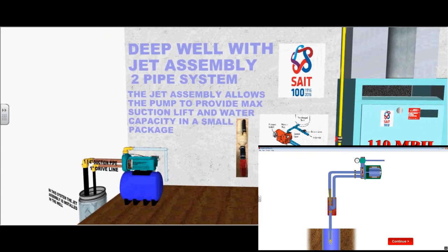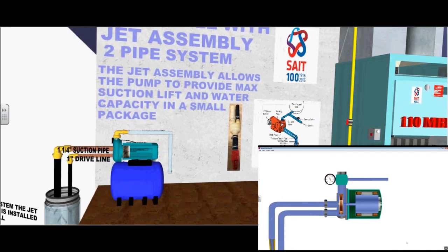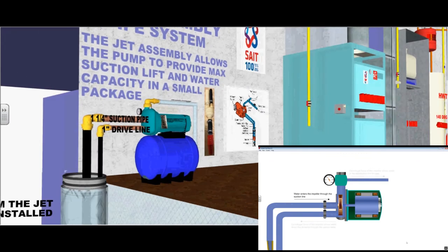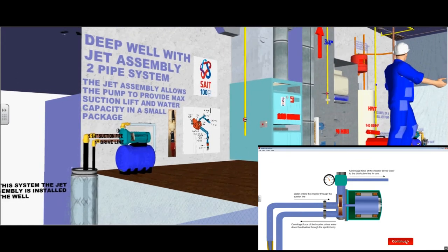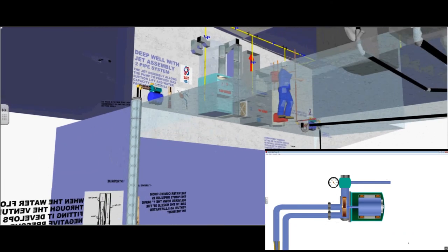Here you can see the jet assembly on the vertical location. It can be attached to the pump or below the pump. Here is the inch and a quarter suction line and one inch drive line. In this system, the jet assembly is installed in the well.